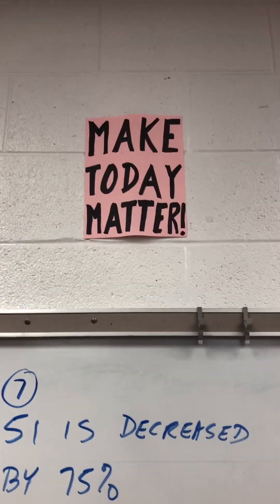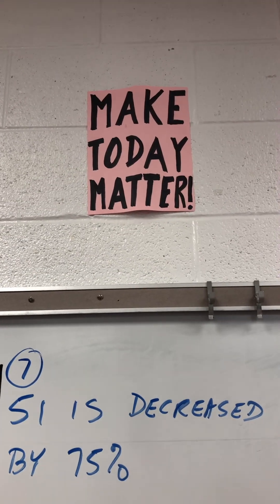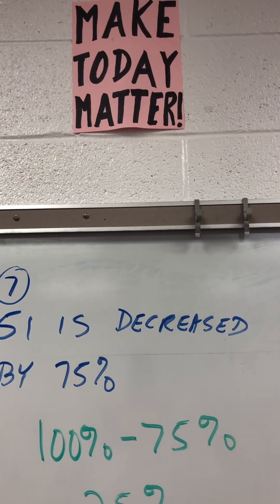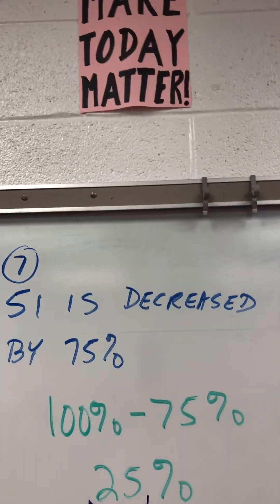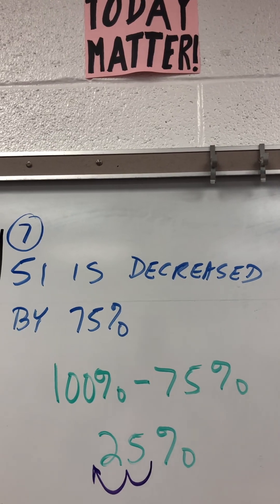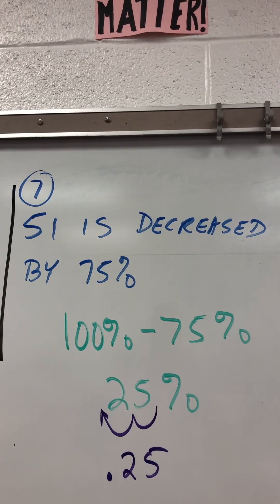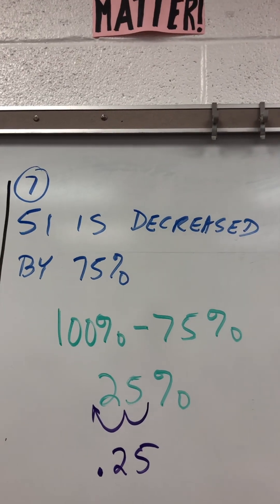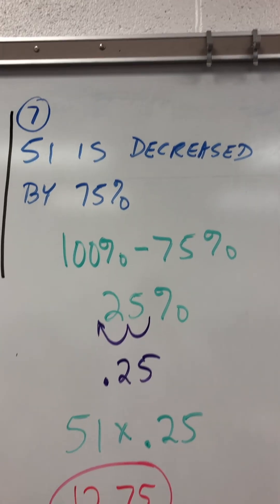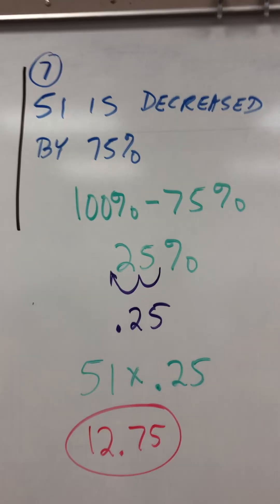51 is decreased by 75%. Do 100% minus 75%. That's 25%. Move the decimal two places, that's 0.25. So do 51 times 0.25. That gives you 12.75.